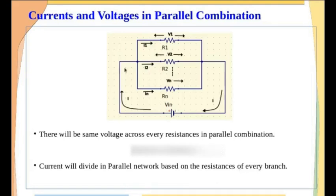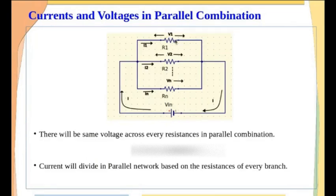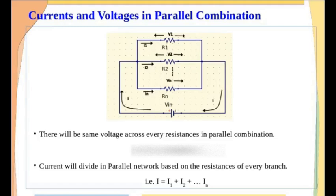Current flows more through a branch where the resistance is less. If the resistance is more, less current flows through that branch. If there is a branch with resistance equal to infinity, zero current will flow through it. If there is a branch with zero resistance, all the current will flow through that particular branch — for example, if R1 = 0, no current will flow through R2 or Rn; all current flows through R1.